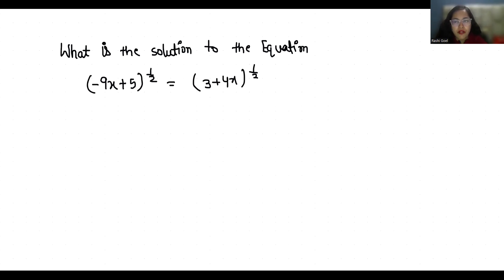Let's start with today's solution. According to exponent rules, power 1/2 can be written as square root, so this is square root of (-9x+5).